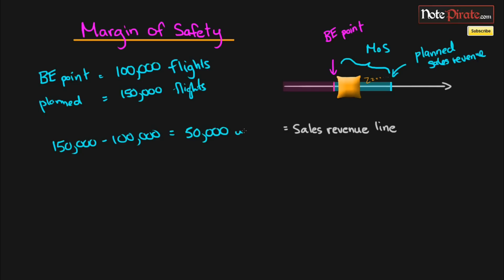So it's very simple: it's just going to be planned subtract the break-even point unit sales. Our margin of safety in units is going to be 50,000 units. That is our margin of safety—I'm just going to highlight it. Of course, you can also express this in dollar form.